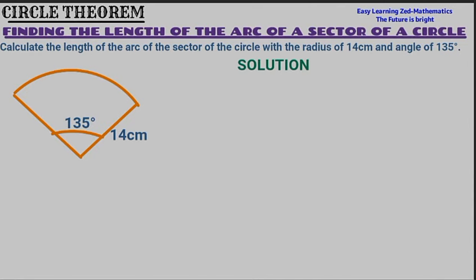What we're going to do first is identify the formula used to find the circumference of the circle. This is the formula used to find the circumference of the complete circle: circumference is equal to pi multiplied by diameter. So if you are given a full circle, you use that formula — pi multiplied by the diameter.